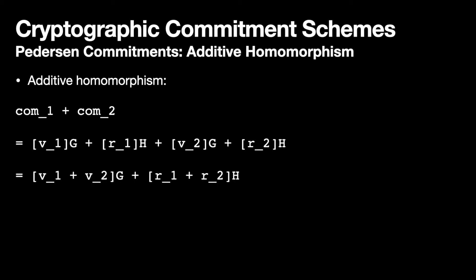Rearranging, we can group together all of our values and all of our random scalars, and that is equal to the commitment of v1 plus v2. And recall, we did all of this without knowledge of v1 or v2.